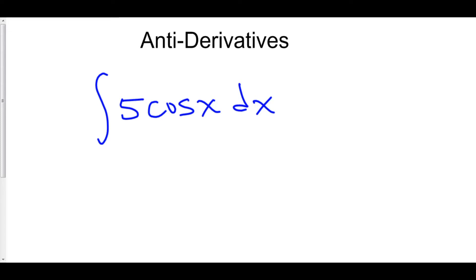which makes everything oh so very nice. So here we have 5 times the antiderivative of cosine x dx.